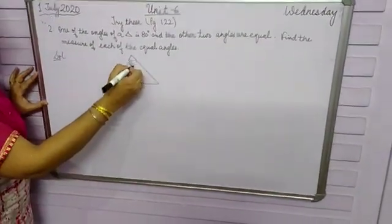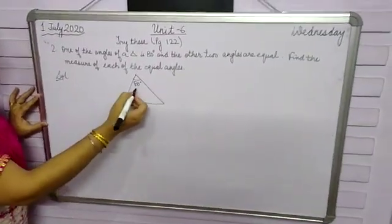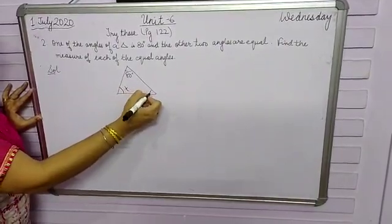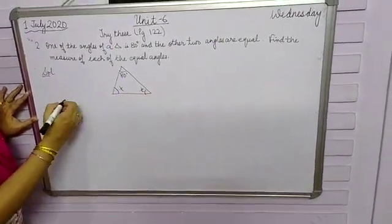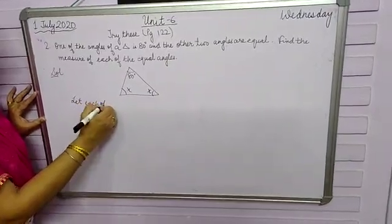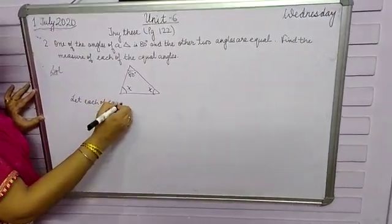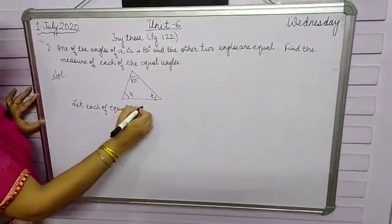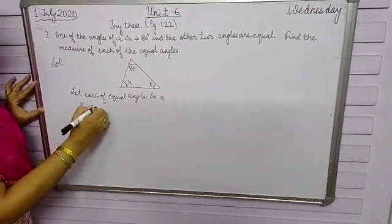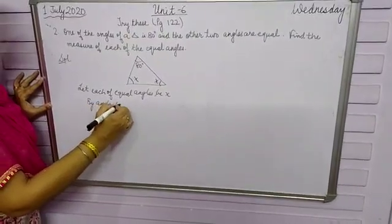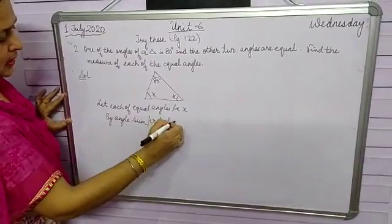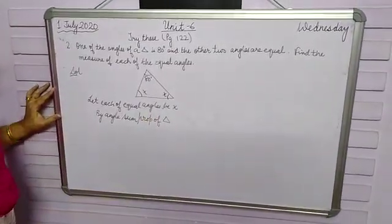I have drawn the figure just to make you understand much better that one of the angles is 80 degrees and the remaining two angles are equal. Let each of the equal angles be x. Now by angle sum property of triangle, it says that the sum of all three angles is equal to 180.